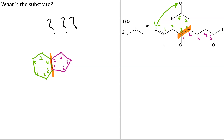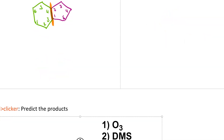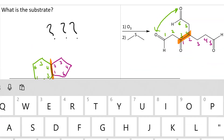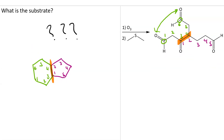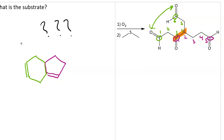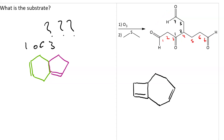Now we know where to put the pi bonds. In the six-membered ring, the pi bond is going to be between carbons one and six. In the five-membered ring, the pi bond is going to be between carbons one and five. But this is just one of three possibilities — see if you can figure out another one. Here is a second possibility; see if you can draw the third on your own.